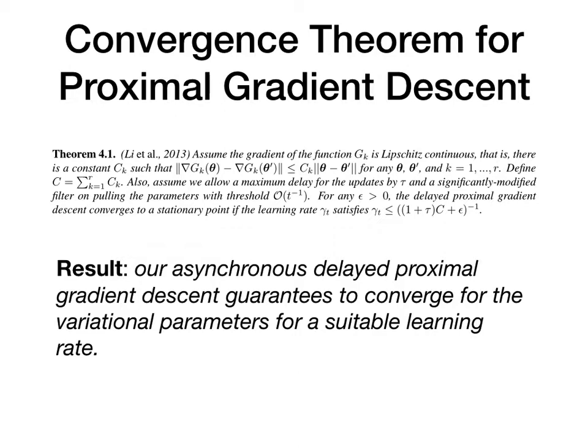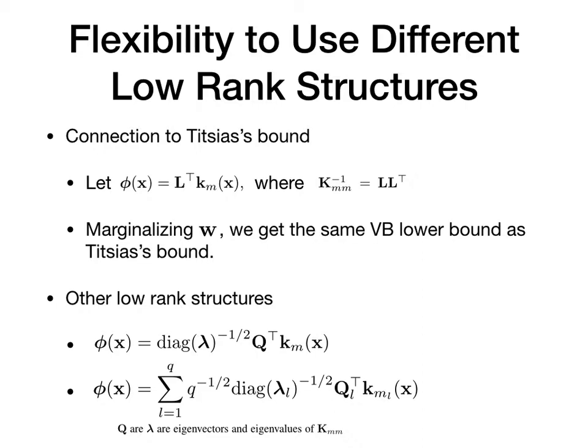Another benefit of our variational lower bound is that we have the flexibility to use different low-rank structures. For example, if we set our mapping function to have the form L-transpose K, where L is the lower triangular decomposition of the kernel matrix on a set of M inducing inputs, our bound can be connected to Titsias's bound if we marginalize the variational variable W. We can also choose many other low-rank structures. For example, we can use the eigendecomposition, which relates our model to the Nyström approximation. We can even use an ensemble form of Nyström approximation to derive a new variational lower bound.